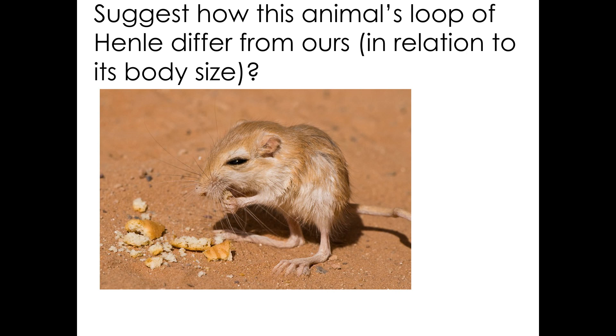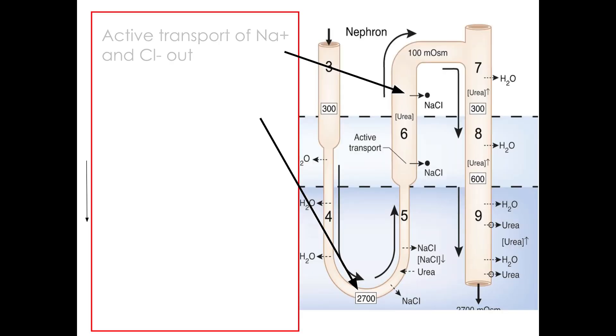Well, any animal that lives within dry and hot conditions would have a longer loop of Henle in comparison to their body size. Now the reason for that is because we get active transport of Na+ and Cl- out at the top of the ascending limb.